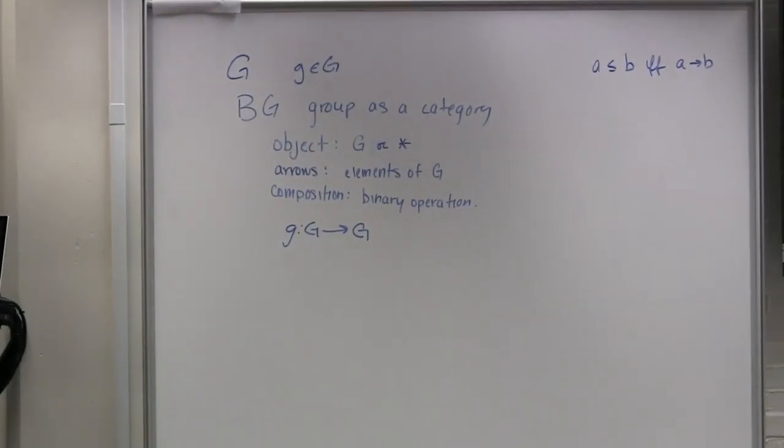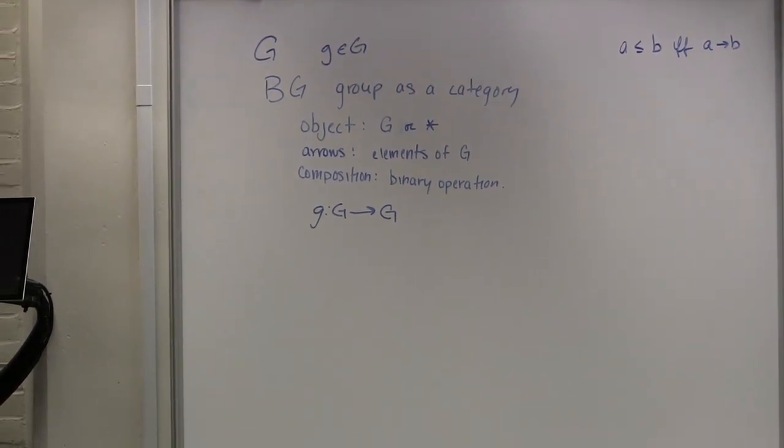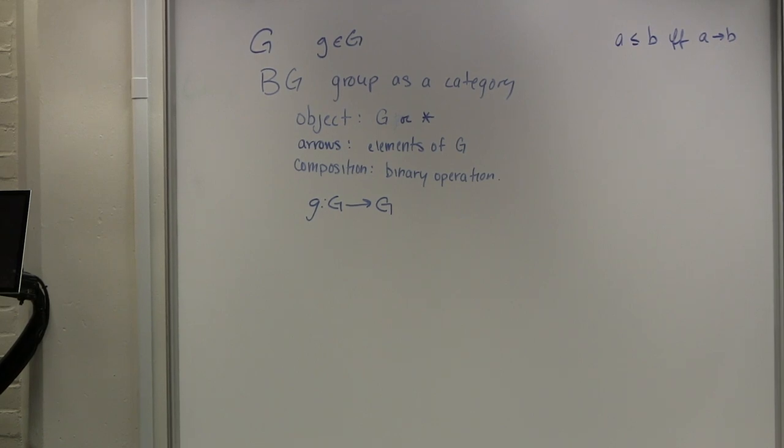Another way of thinking about this distinction is to consider posets. Any partially ordered set gives you a category: interpret the elements as objects, and for every pair A, B, include an arrow A → B if and only if A ≤ B. The arrows come directly from the ordering relation, not from any set-theoretic construction. So again, this arrow is just corresponding to the relation we get from the partially ordered set — a generalization of set-theoretic functions.